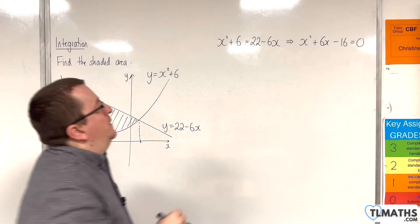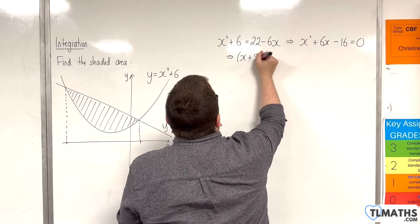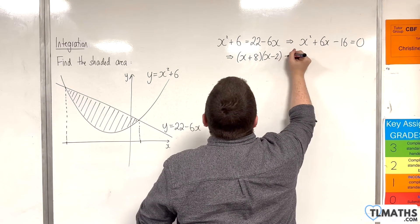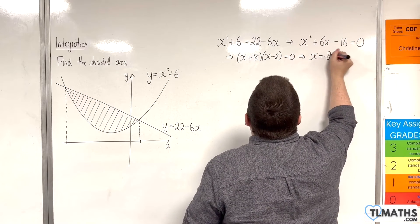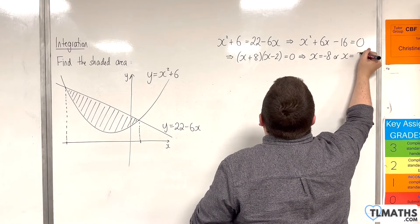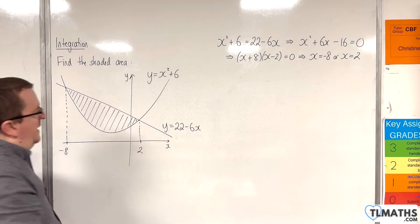Now, that's a quadratic that can factorise. So, we're going to have x plus 8 times x take away 2 is equal to 0. So, x is equal to minus 8 or x is equal to 2. And so, these are the two points where the graphs intersect.